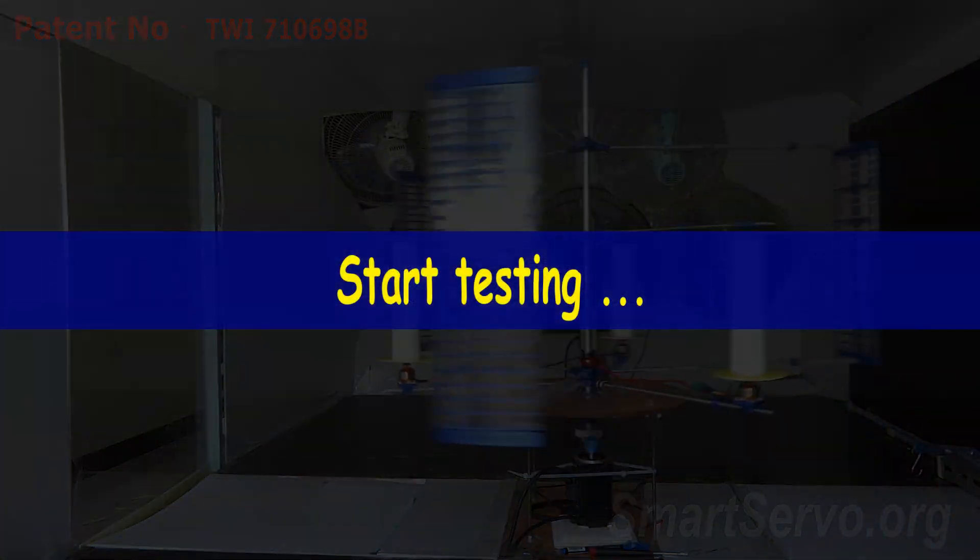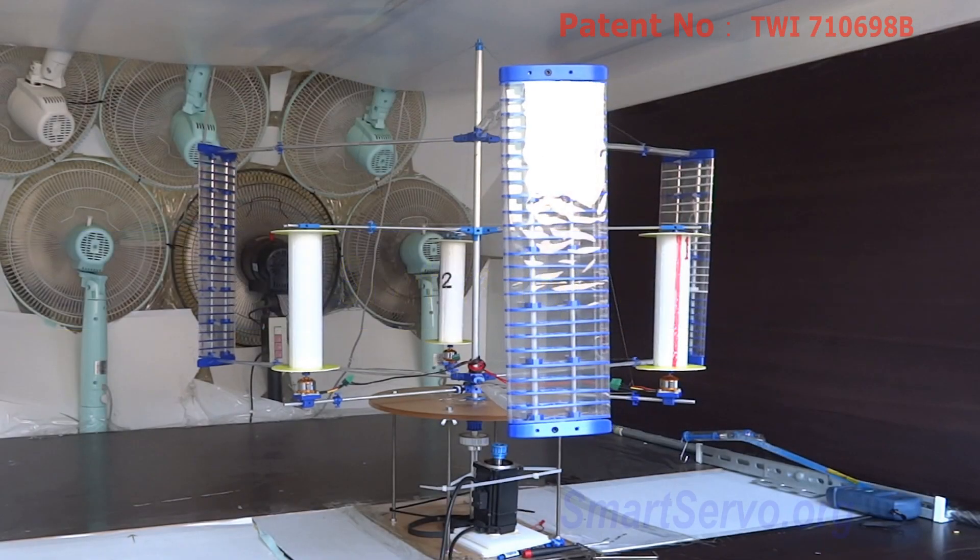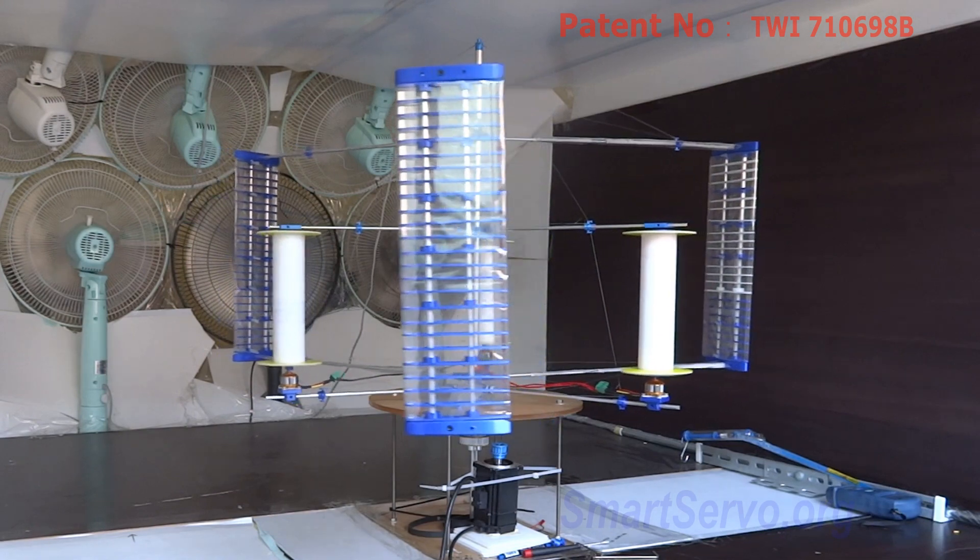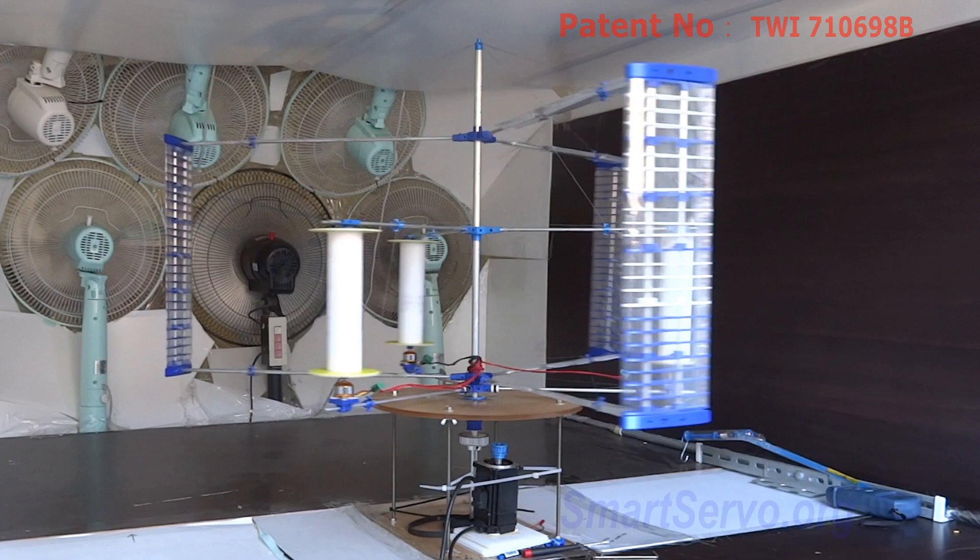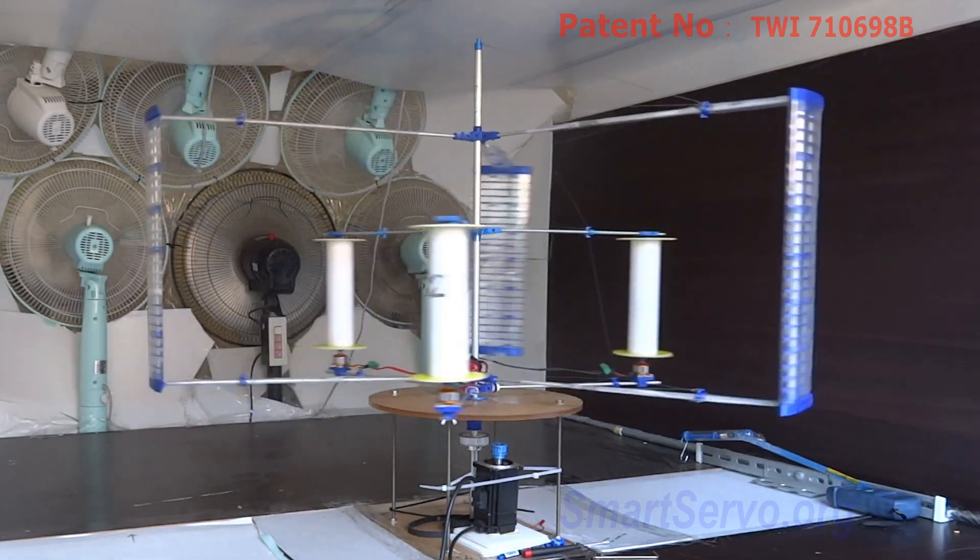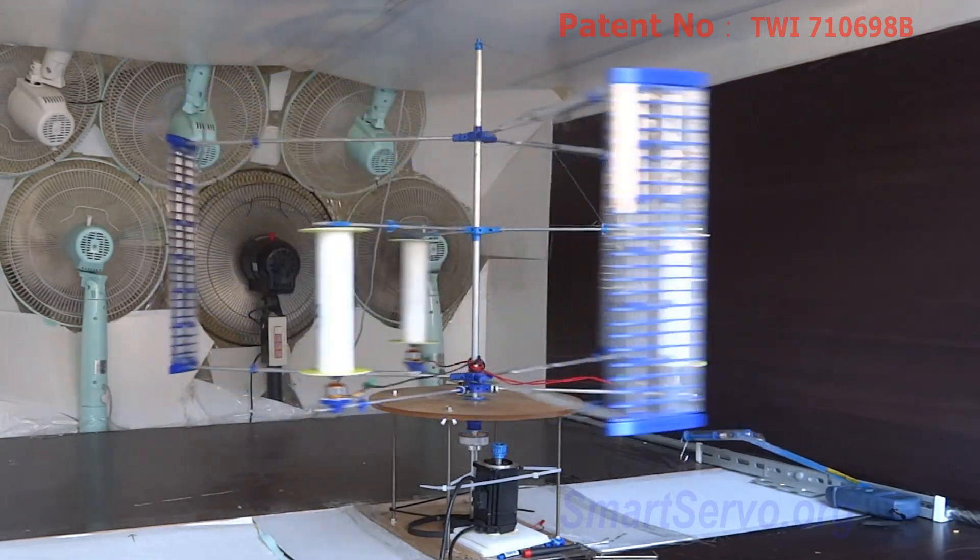Start testing. The rotation radius of the rotor is set to two-thirds of the wind turbine. The acceleration is quite fast.